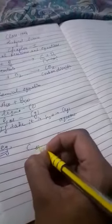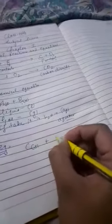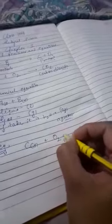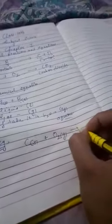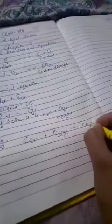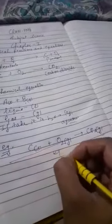For example, carbon is solid, so we write carbon S plus oxygen is gas, so we write O2 gas. React to form CO2 which is also gas. So this type of representation is called equation.